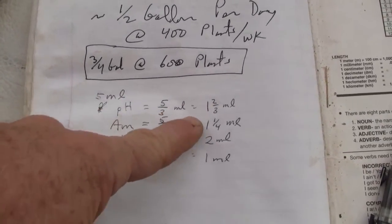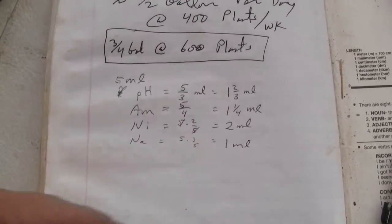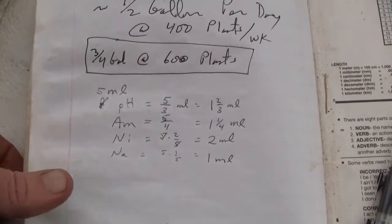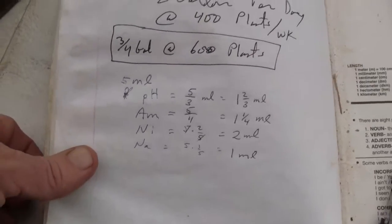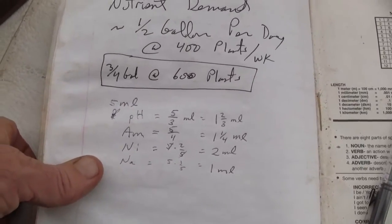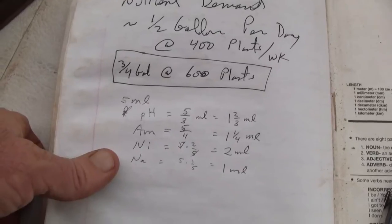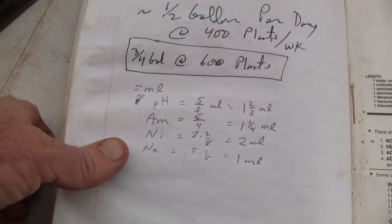One and two thirds, one and a quarter, two and one milliliters. That'll get you the four amounts. And then that way you put one drop of pH and two drops of each of the other three reagents.